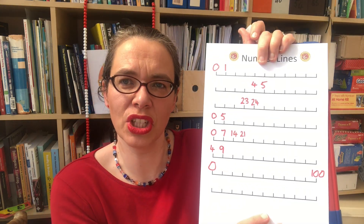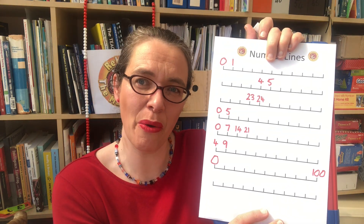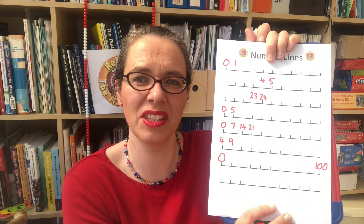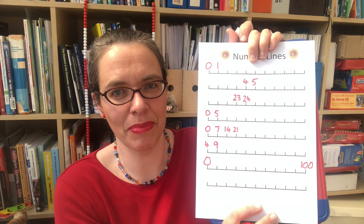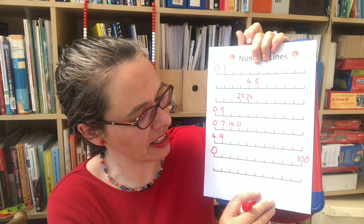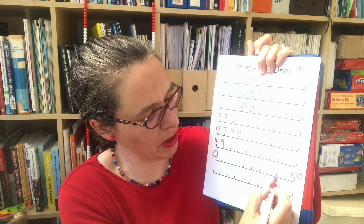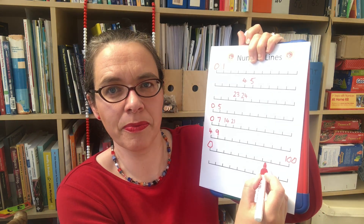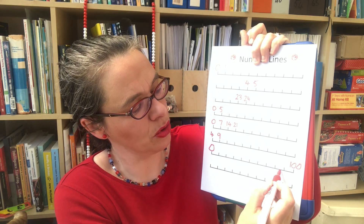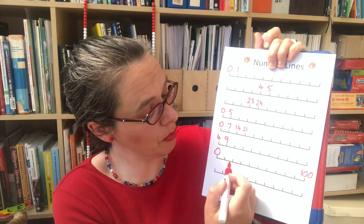Give your child any number between zero and a hundred and ask them to point to where it would be on the number line. For example, if they said 87, we'd expect them to see that it would be between these two marks and also to place it closer to 90 than to 80.